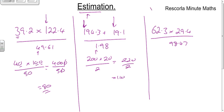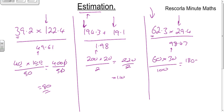Pause the video and have a go at the third one. When you're ready: you round to the nearest 10 because it's in the tens column, so that's 60. The next one is also in the tens column, so you round to the nearest 10 — that's 30. The third one underneath is also in the tens, so you round to the nearest 10. 98 to the nearest 10 is 100. So 60 times 30: 6 times 3 is 18, with two zeros, giving 1,800 divided by 100.